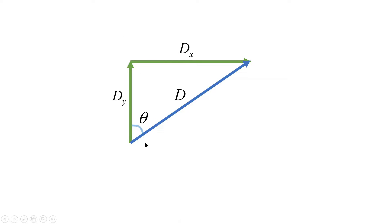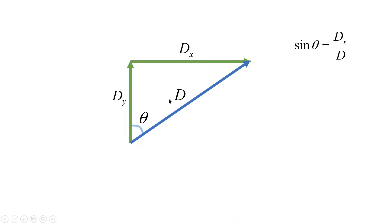This time the angle theta is with the Y component. Before, theta was with the X component; now theta is with the Y component. Similarly, because this is a right angle triangle we use trigonometry. Sine theta equals opposite over hypotenuse, so it's DX over D. We get DX equal to D sine theta — the opposite component uses D sine theta.